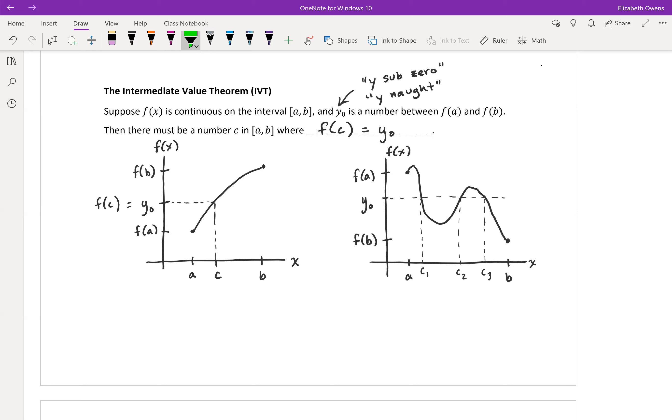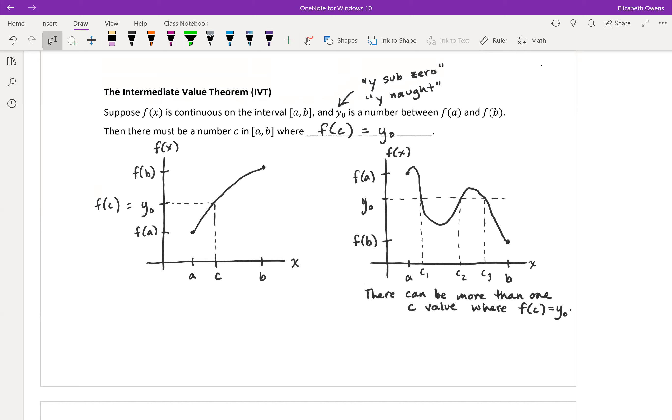All the IVT is guaranteeing us is that there's at least one number c where this is satisfied. If there's more than one c, that's not off limits. It's just sometimes that doesn't happen. We're not guaranteed that there's going to be more than one, but we are guaranteed that it's going to happen. So I'll make us a little note: there can be more than one c value where f(c) equals y not. But there doesn't have to be.